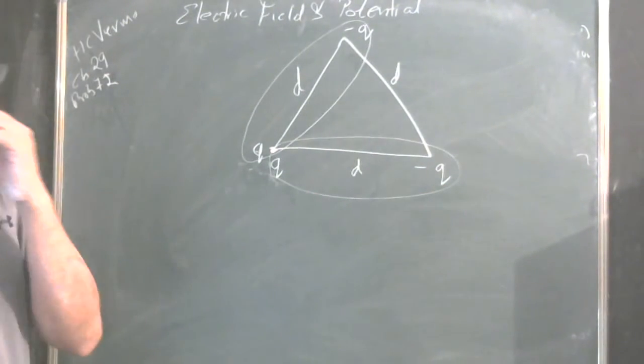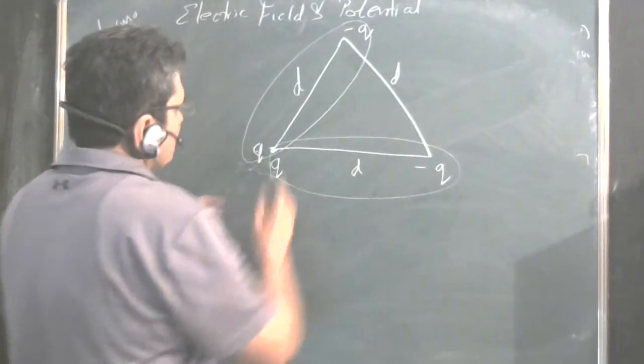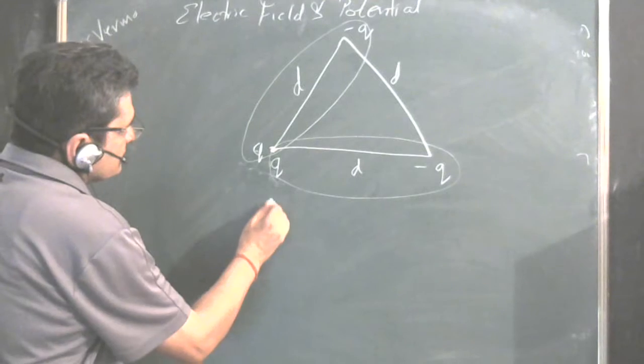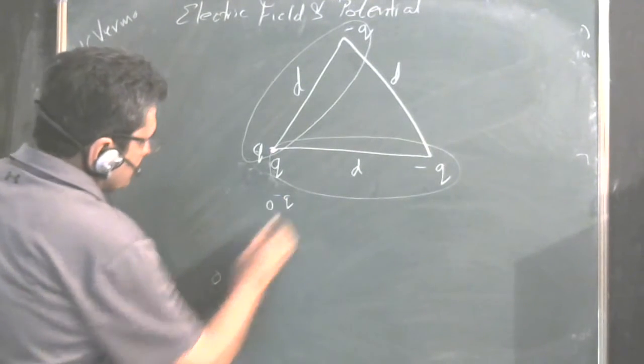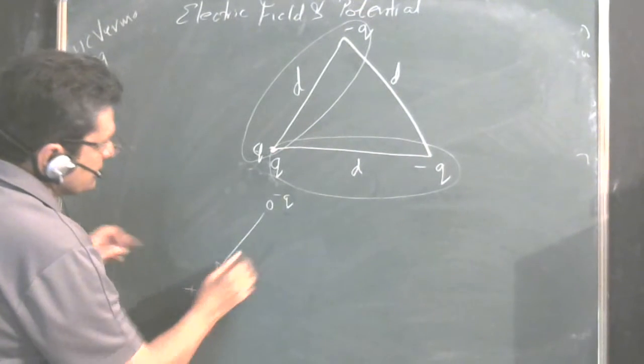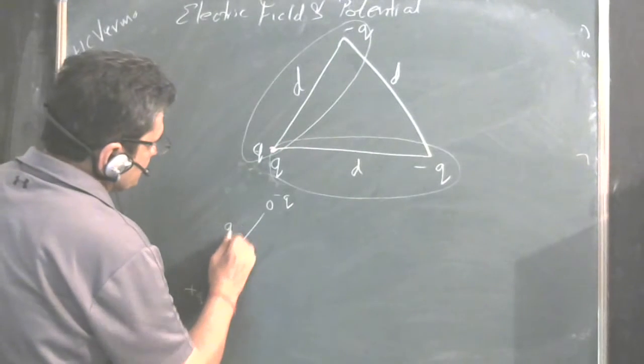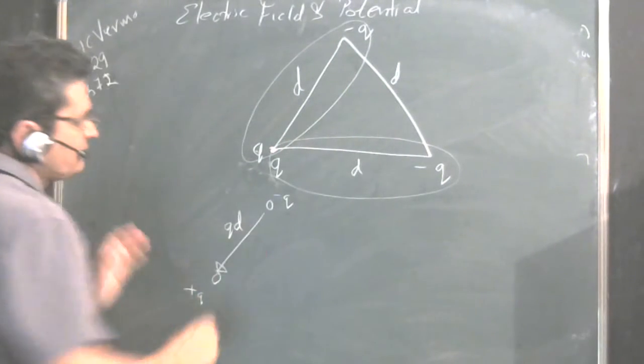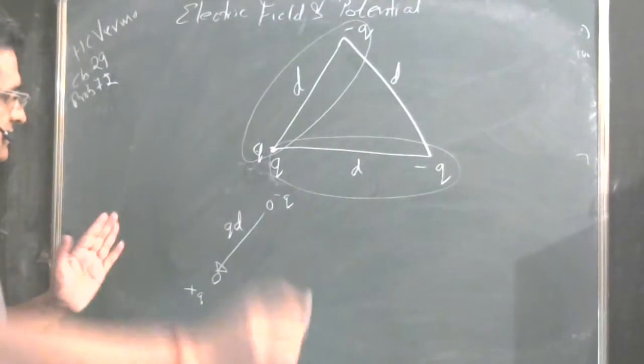And dipole moment is a vector quantity. It has a direction. What is the dipole moment of this? Because these two, that is minus Q here and plus Q here, will have a dipole moment equal to charge times the distance, which is Q times D. And dipole moment is always from the negative charge to the positive charge. This is the direction.